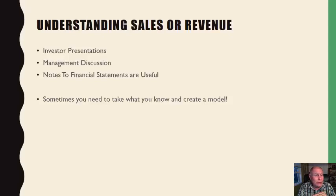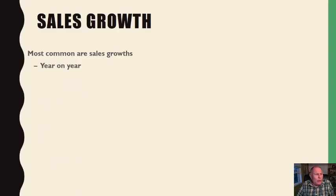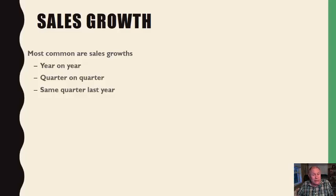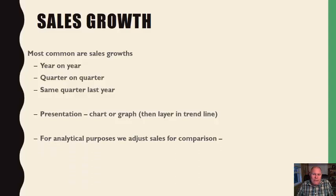The most common metrics at the sales level are sales growth — looking year-to-year, quarter-on-quarter, and same quarter last year. Same quarter last year is used to identify seasonality, since some businesses have seasonal patterns. You can see this in a chart or graph and layer in a trend line. For analytical purposes, we adjust sales for comparison and can overlay them against industry data or use common-size analysis.